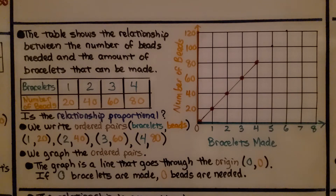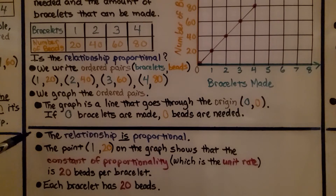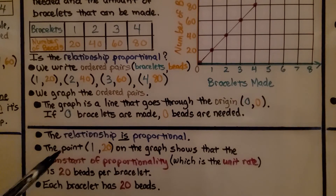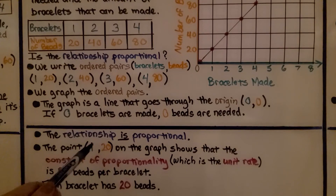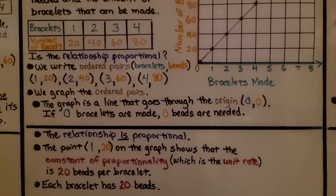We graph the ordered pairs, and the graph is a line that goes through the origin (0, 0). If zero bracelets are made, zero beads are needed. The relationship is proportional. The point (1, 20) on the graph shows the constant of proportionality — that's the unit rate — 20 beads per bracelet. Each bracelet has 20 beads.